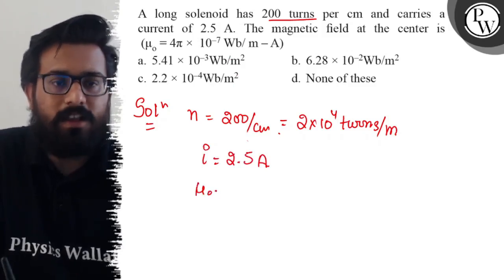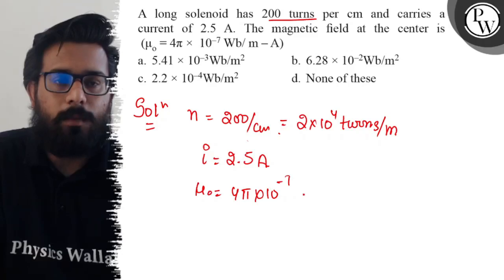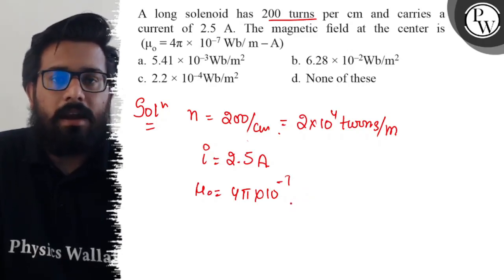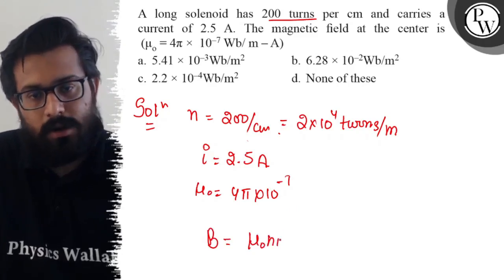The value of μ₀ is given as 4π × 10^-7 Weber per ampere meter. And you have to find the value of magnetic field at the center. It comes out with B = μ₀ni.